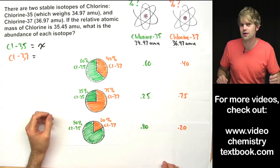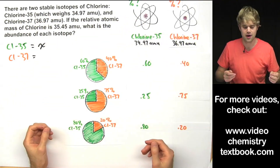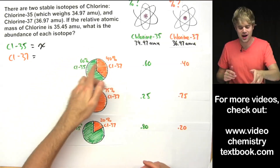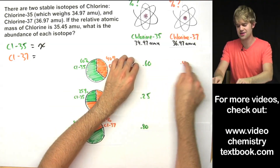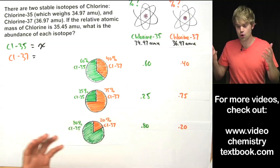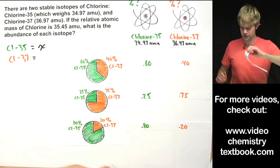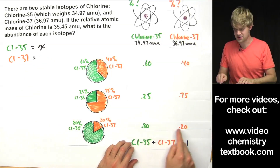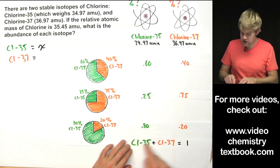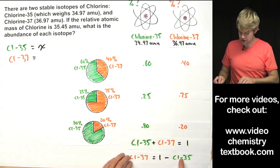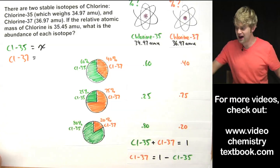Do you see the pattern going on here? Because we only have two possible isotopes for this problem, when we add the two of them together, they always have to come out to 100%, or if we're expressing their abundances as decimals, when we add the two abundances up, they have to come out to 1. We can use this to come up with an expression for chlorine-37. Chlorine-35 plus chlorine-37, when expressed as decimals, always equals 1. So we can rearrange this equation to get chlorine-37 equals 1 minus the amount of chlorine-35.